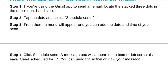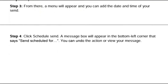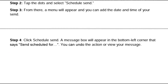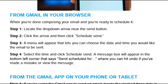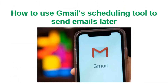A message box will appear in the bottom left corner that says 'Send Scheduled for'. You can undo the action or view your message. So this is how you can use Gmail's scheduling tool. I hope this video will help you. Thank you for watching.